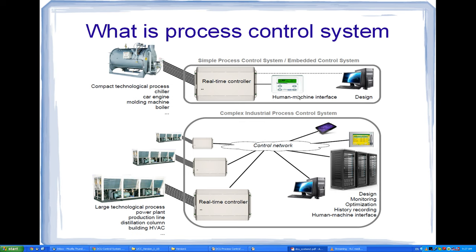We also have a PC or computer on which we do the design and programming of our real-time controller. In the case of a simple process control system or embedded control system, the entire system consists of only the real-time controller, some simple human-machine interface, and a computer for designing — but this one is not connected permanently.